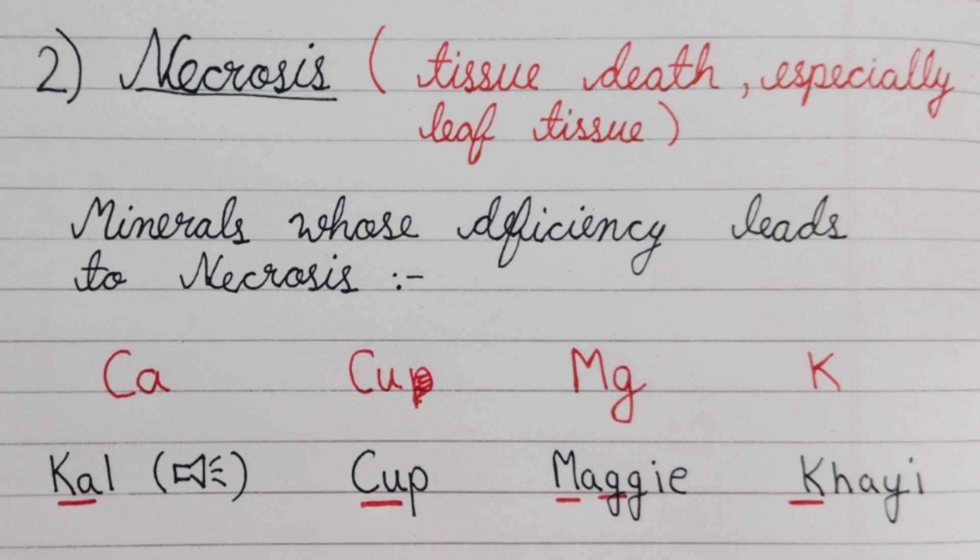The mnemonic for necrosis is 'kal kap magi khai.' From 'kal,' we take the pronunciation Ca, which stands for calcium. From 'kap,' we take Cu, which stands for copper. From 'magi,' we take the letters M and G, giving us Mg — magnesium. And from 'khai,' the letter K stands for potassium. So 'kal kap magi khai' gives us calcium, copper, magnesium, and potassium.